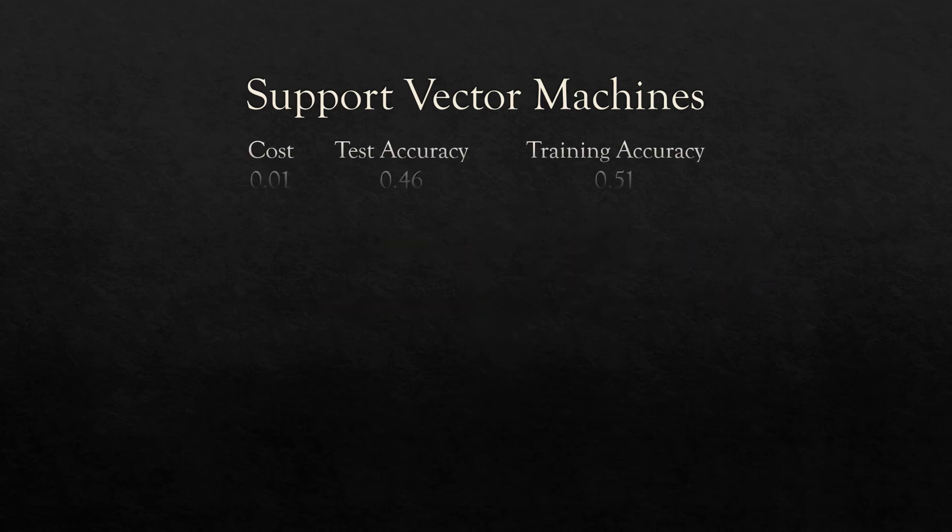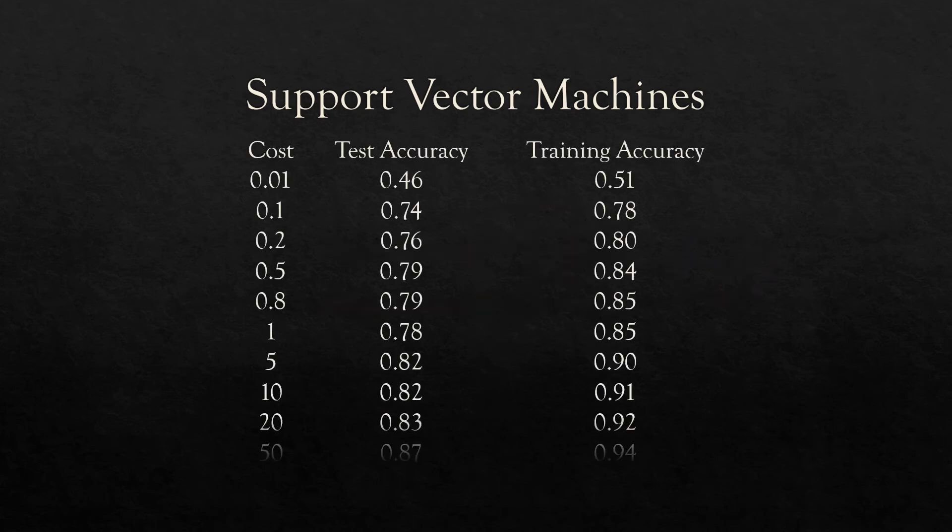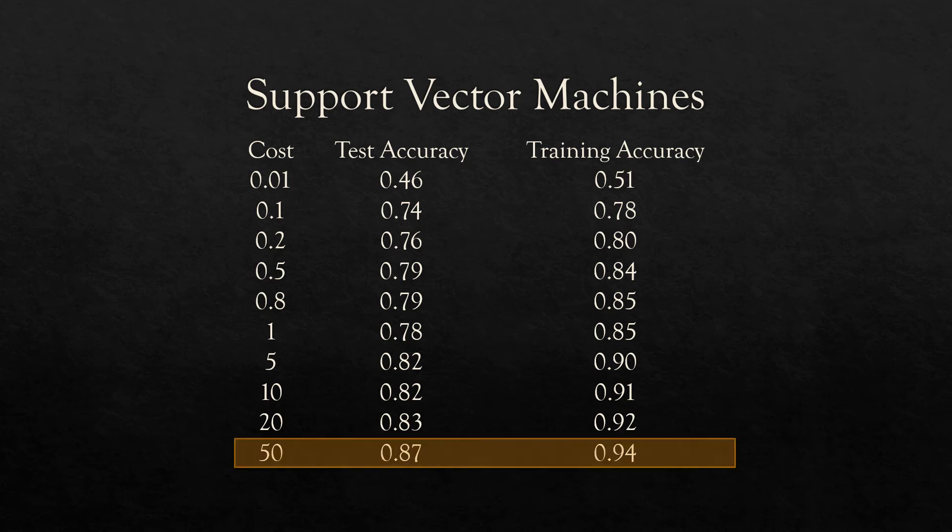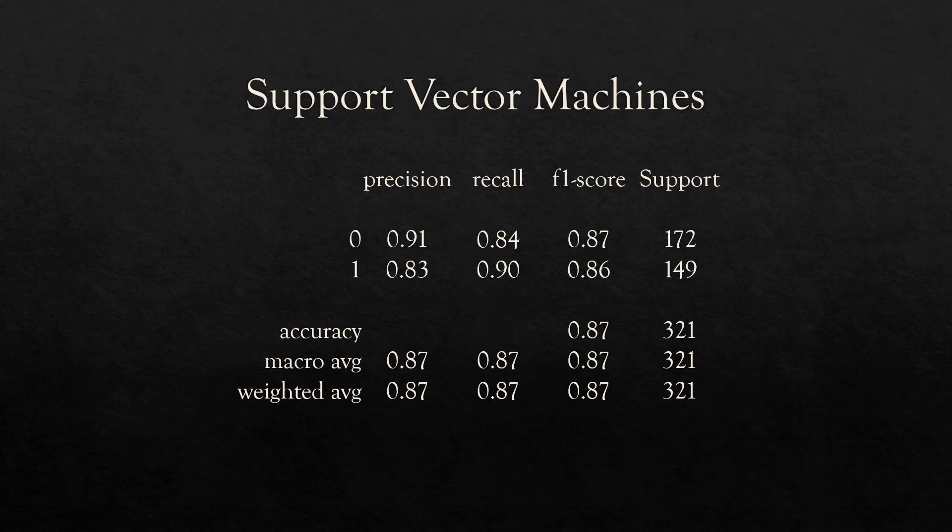Increasing the cost at every step penalizes the model, yes, but produces a greater propensity for classification at each iteration. Thus, the highest test accuracy of 87% is achieved where cost equals 50. The F1 score is 9% less than that of the random forest classifier, granted. However, this is still much better than that of the logistic regression model.